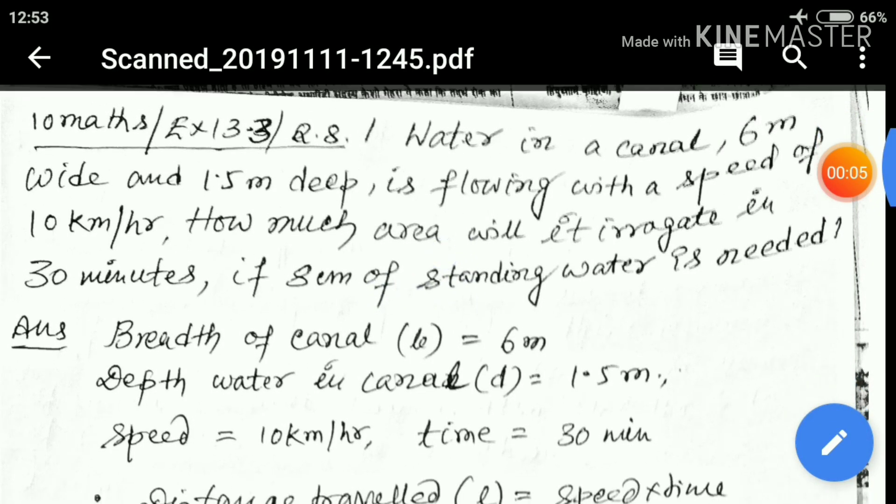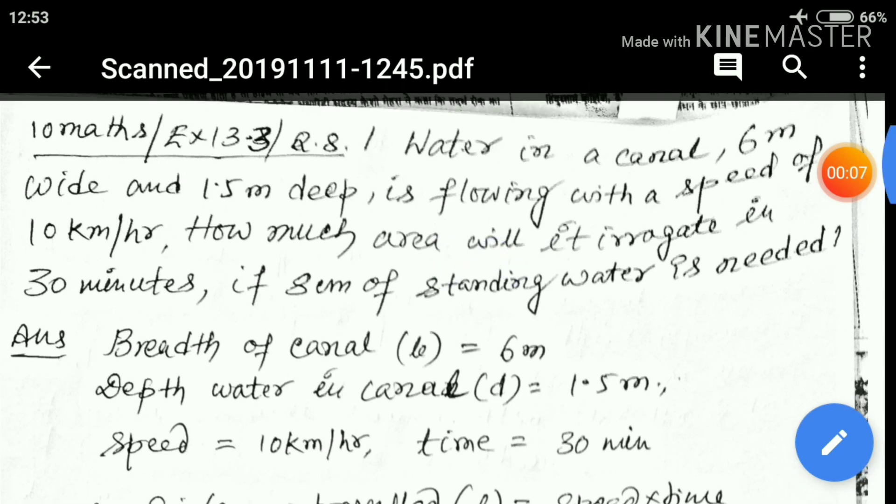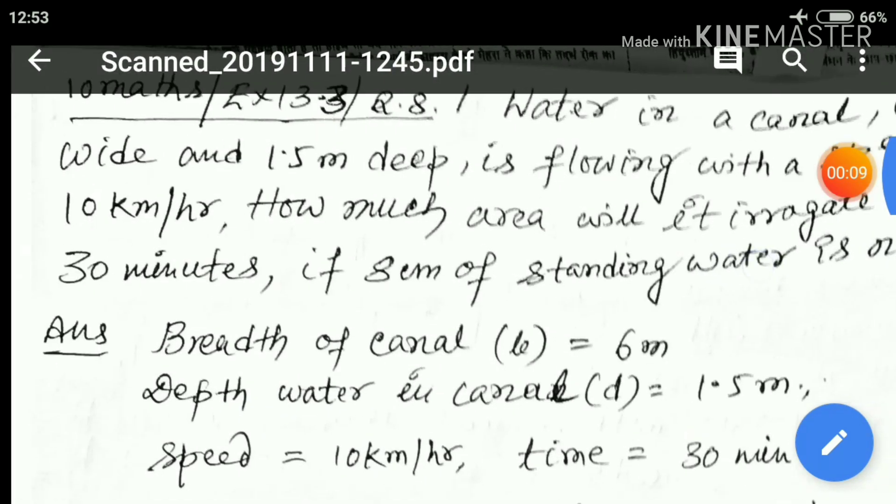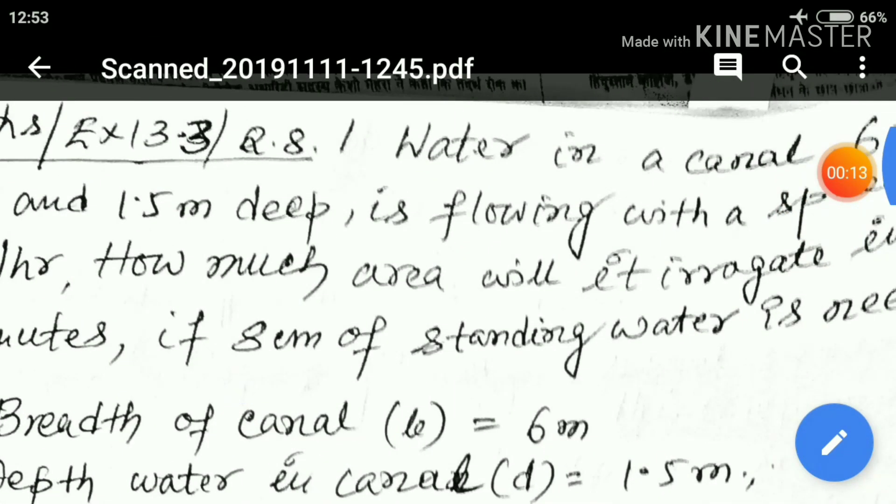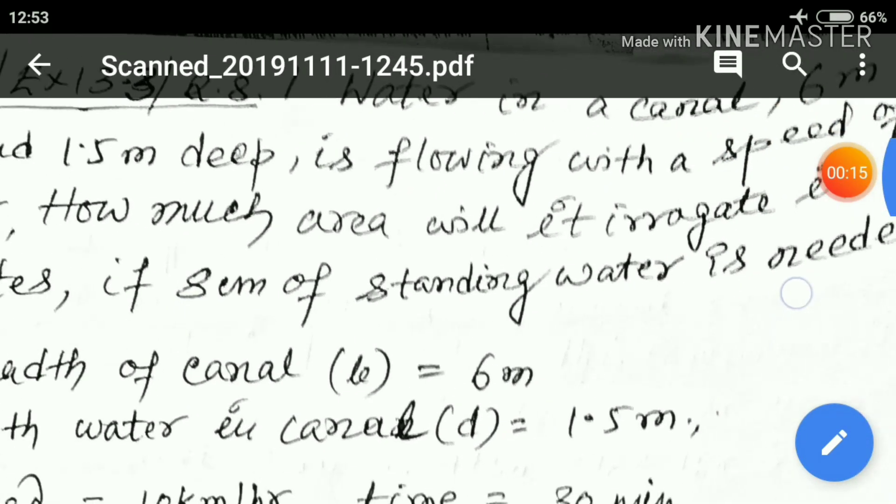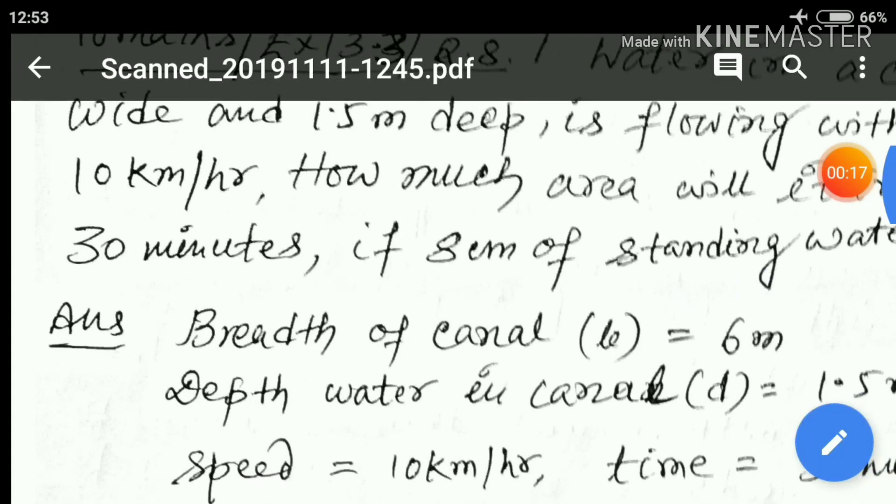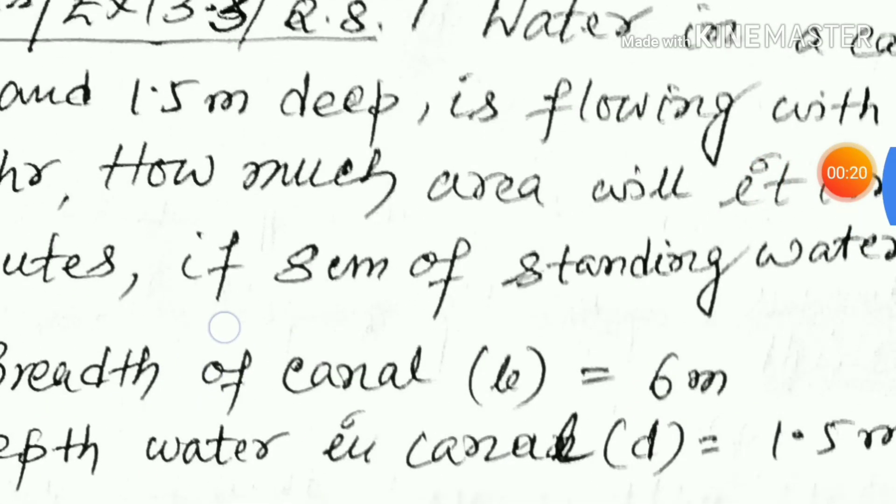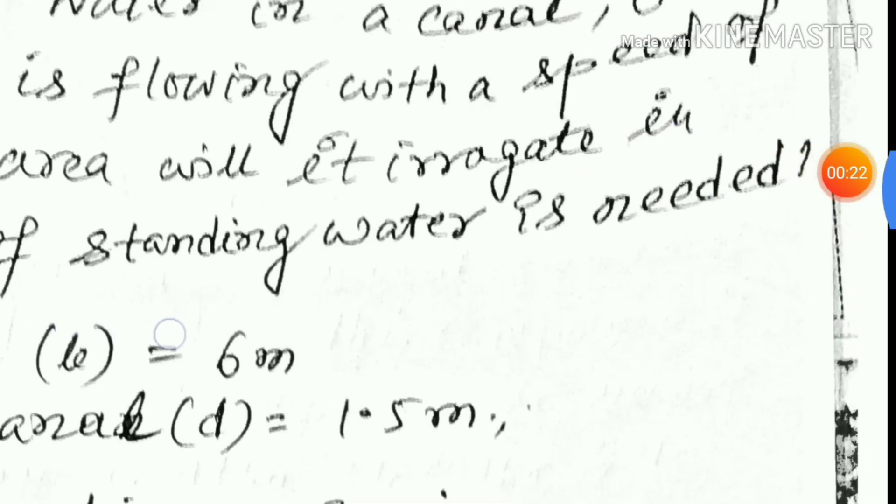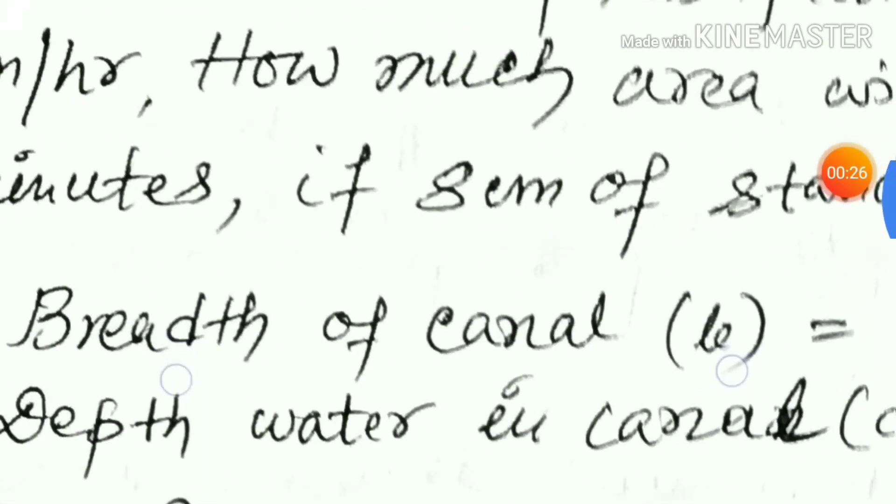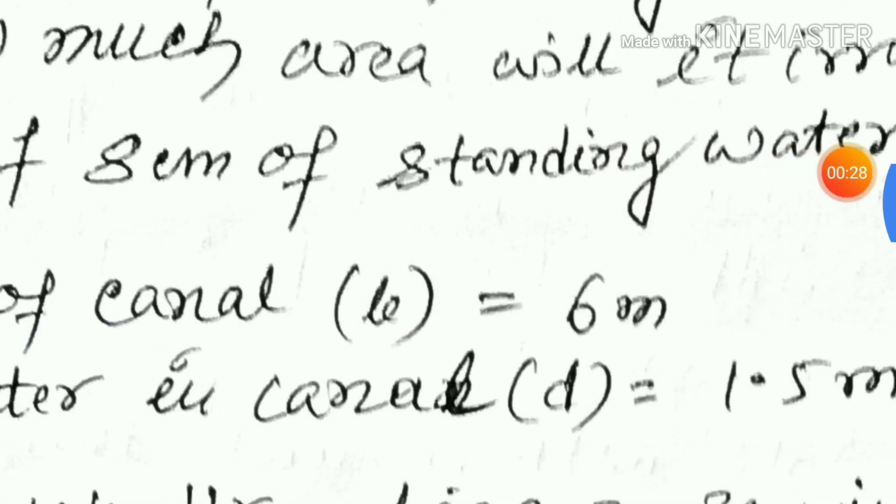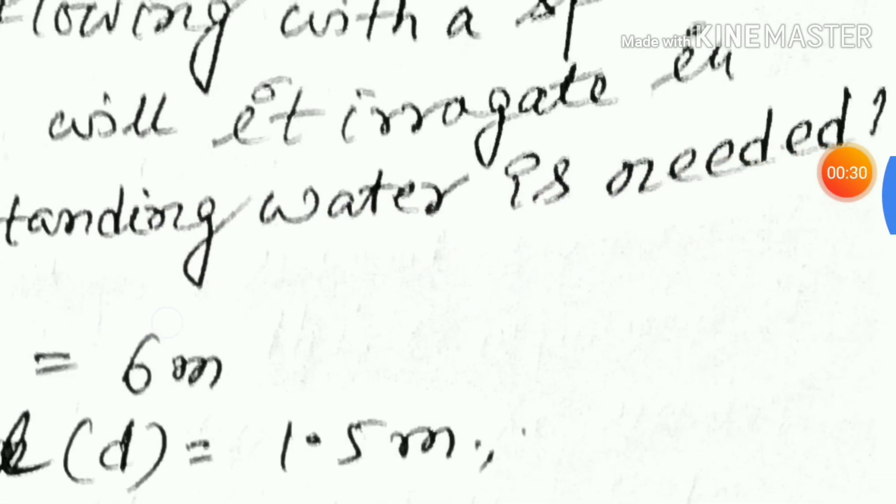This question - water in a canal 6 meter wide and 1.5 meter deep is flowing with a speed of 10 kmph. How much area will it irrigate in 30 minutes if 8.5 cm of standing water is needed?